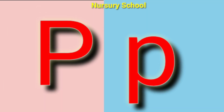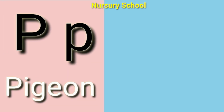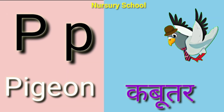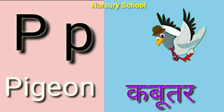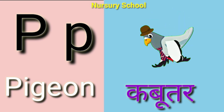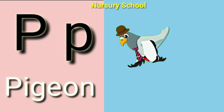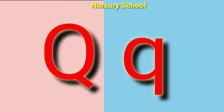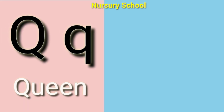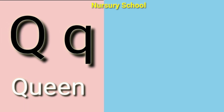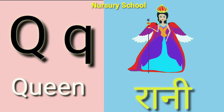P for pigeon, pigeon means kabooter. Q for queen, queen means rani.